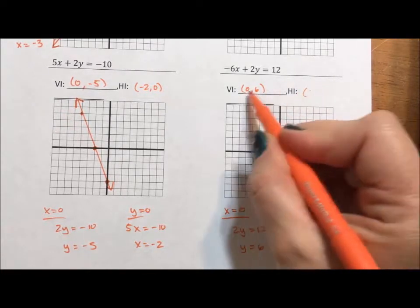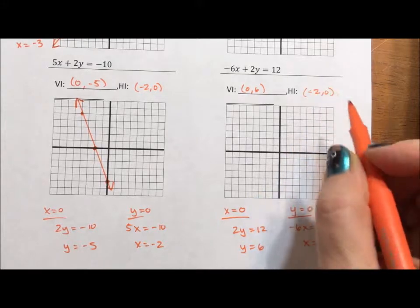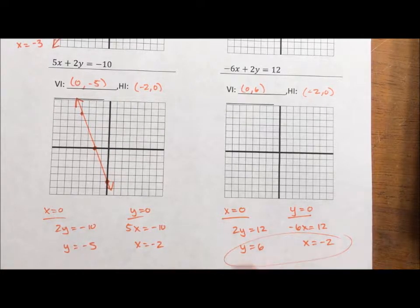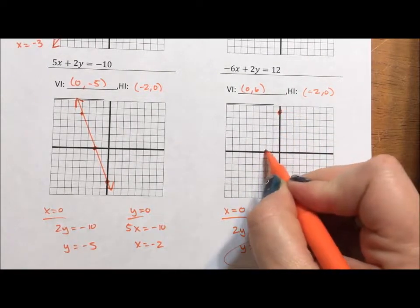Honestly, if I wasn't being asked here for the vertical and horizontal intercepts, I wouldn't do this part. I would just leave it like this. At that point, I don't write it with the zeros and the commas because I'm not actually asking for an intercept. I'm just graphing, and if I'm just graphing, I'm going to graph 6. I'm going to graph negative 2.